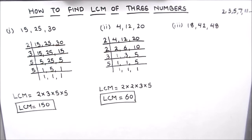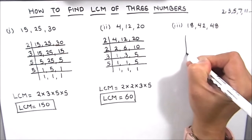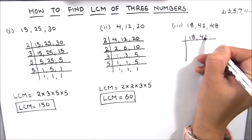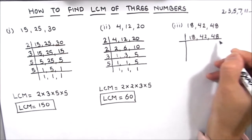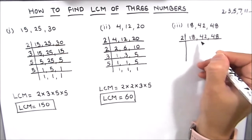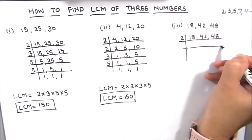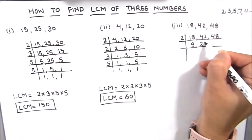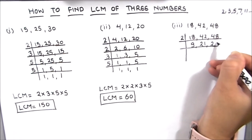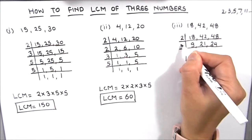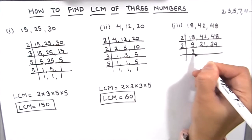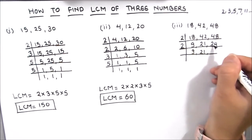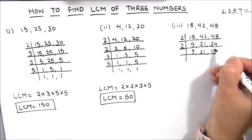Now let's move on to our last example where we are going to find the LCM of 18, 42 and 48. As all the three numbers are even, we are going to use 2 as the prime factor. So 2 times 9 is 18, 2 times 21 is 42 and 2 times 24 is 48. Dividing again by 2, we write 9 and 21 as is because these are not fully divisible by 2, and 2 times 12 is 24.